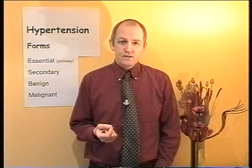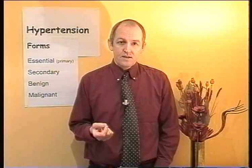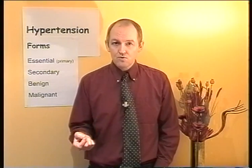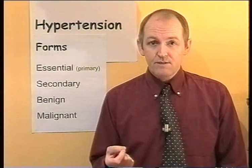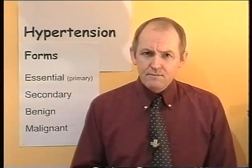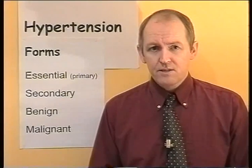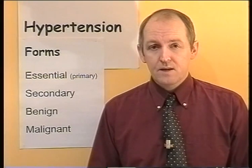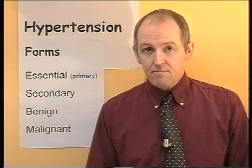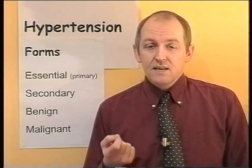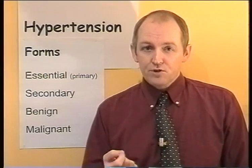The next type is secondary hypertension - a condition which is secondary to something else. For example, there might be kidney disease, and the hypertension occurs as a result of that kidney disease. Secondary forms of hypertension are fairly uncommon - figures vary, but maybe between two and five percent of cases in the United Kingdom and most of the western world are secondary to some other disease process. It's very important that anyone presenting with hypertension is investigated for these other possible primary causes, because they may be amenable to treatment.